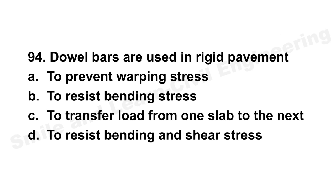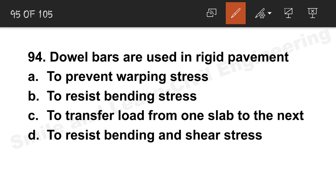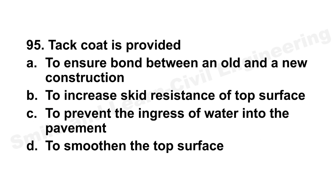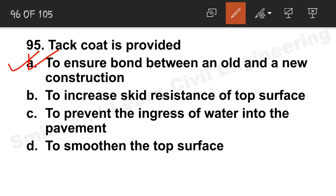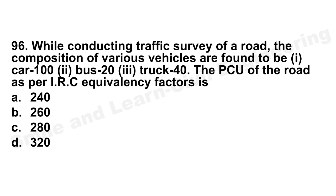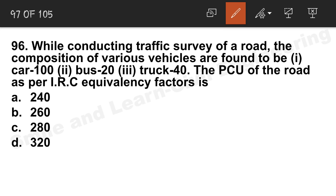Question 95: Tack coat is provided to ensure bond between old and new construction. Option A is the correct answer. Note: seal coat prevents skin resistance of the top surface and prevents ingress of water into the pavement.